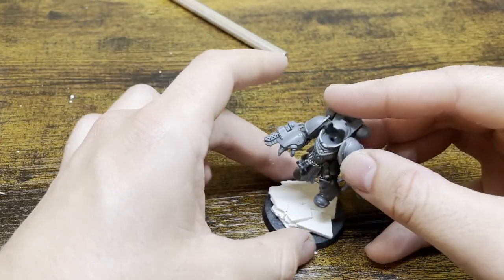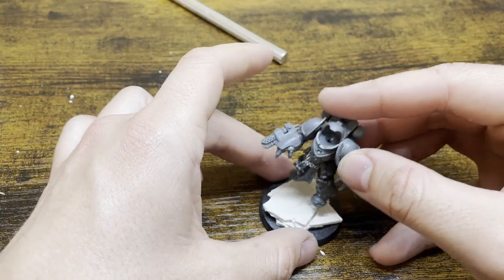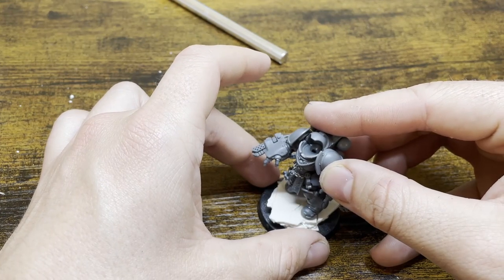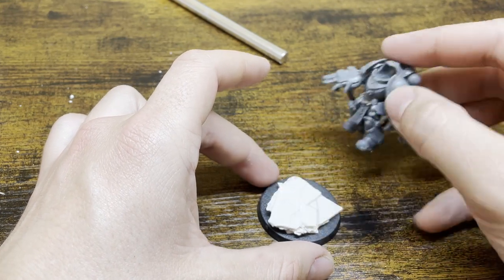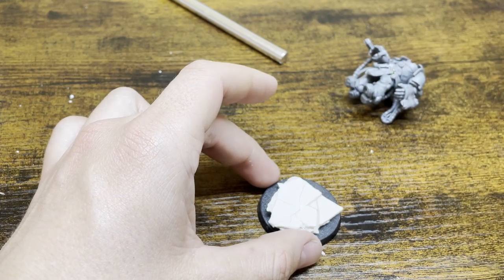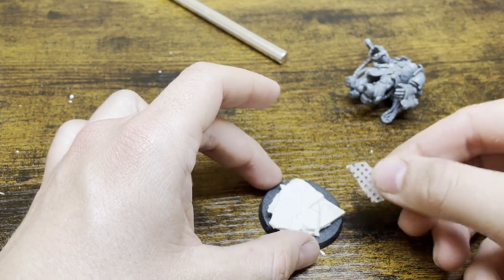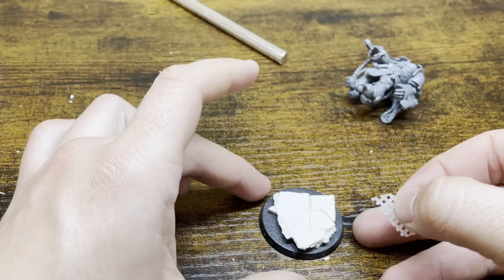Periodically as I add things to the base, I'll make sure I constantly test fit the model. This is to make sure that it has a good looking stance whenever I put the model on it. But from here on out, it's a little bit free form. You can add whatever you want. You are designing rubble, so there's not really too much of a way you can screw this up.